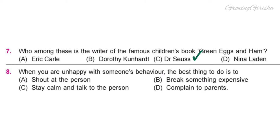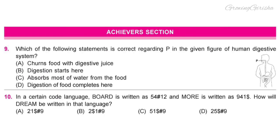Question 8. When you are unhappy with someone's behavior, the best thing to do is: Option C: Stay calm and talk to the person.